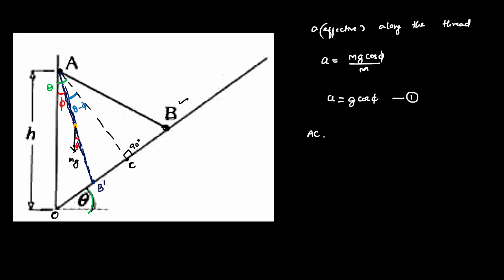The perpendicular line A to C has length h·cos(θ). This is also equal to L·cos(θ - φ), where L is the length of thread AB-dash. So we have: h·cos(θ) = L·cos(θ - φ). This is equation 2.